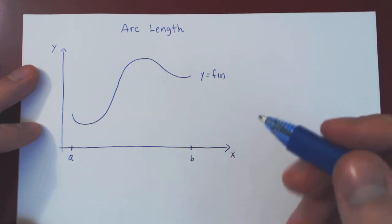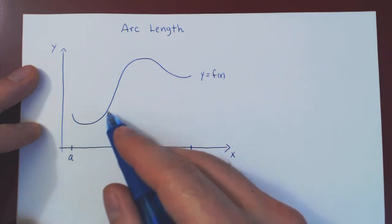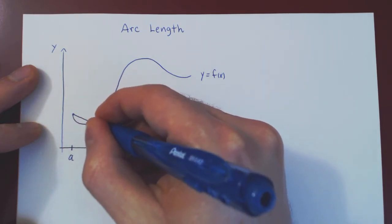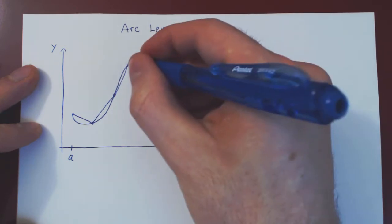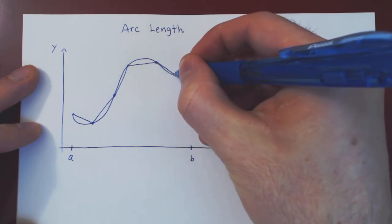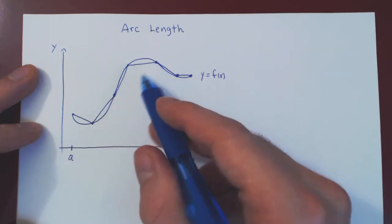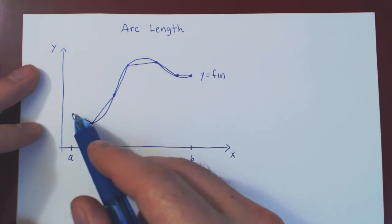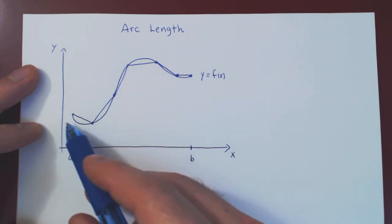Let's think of a simple way to approximate the curve with a set of very small line segments. The simplest curve to find the length of is a straight line segment. So imagine we cover this curve with short line segments — one from here to here, another from here to here, and so on. If you add the lengths of each line segment, you will have an approximation to the exact length of the curve.